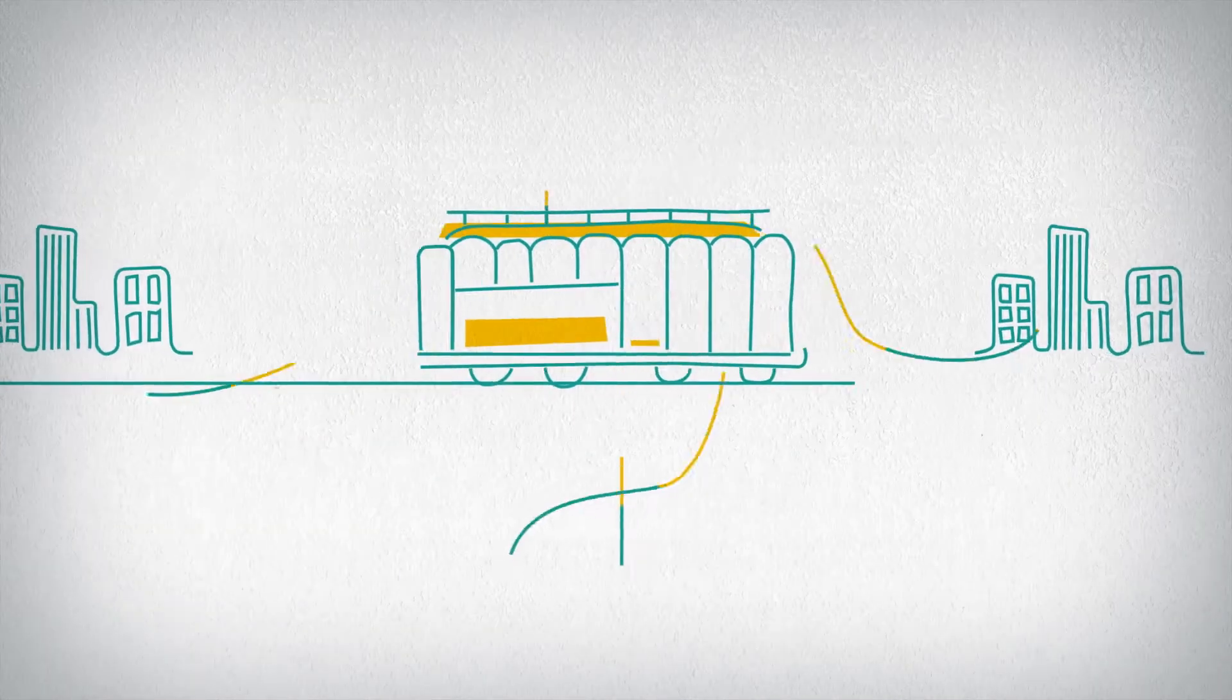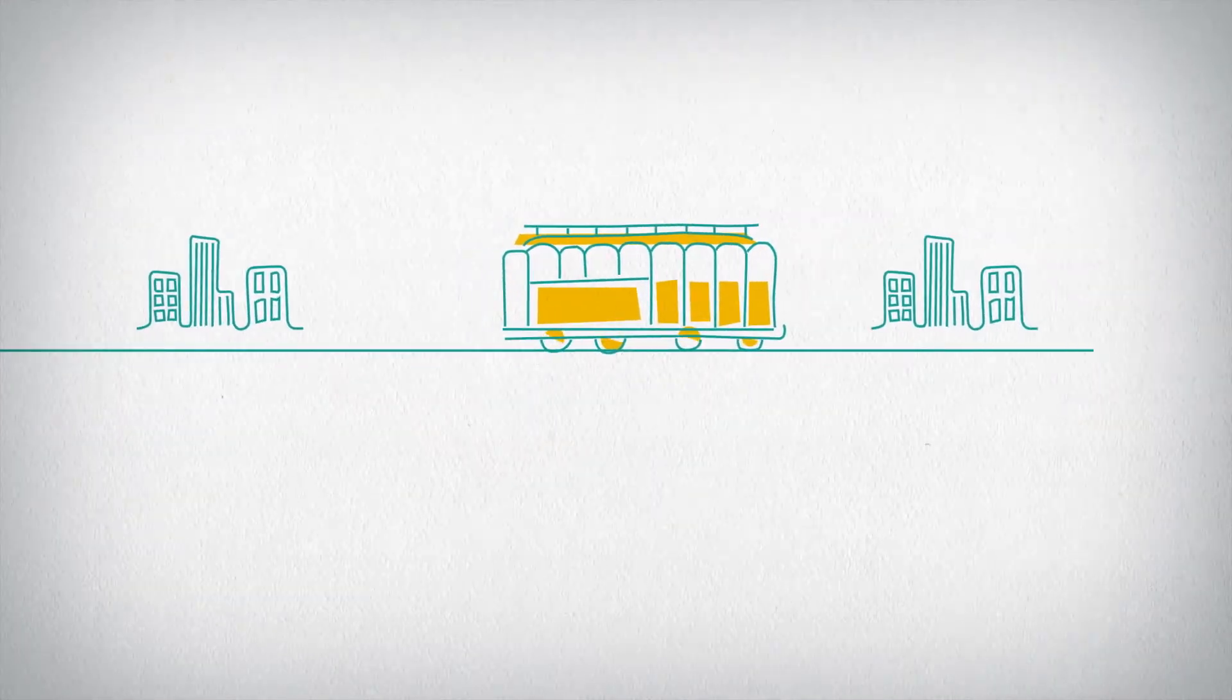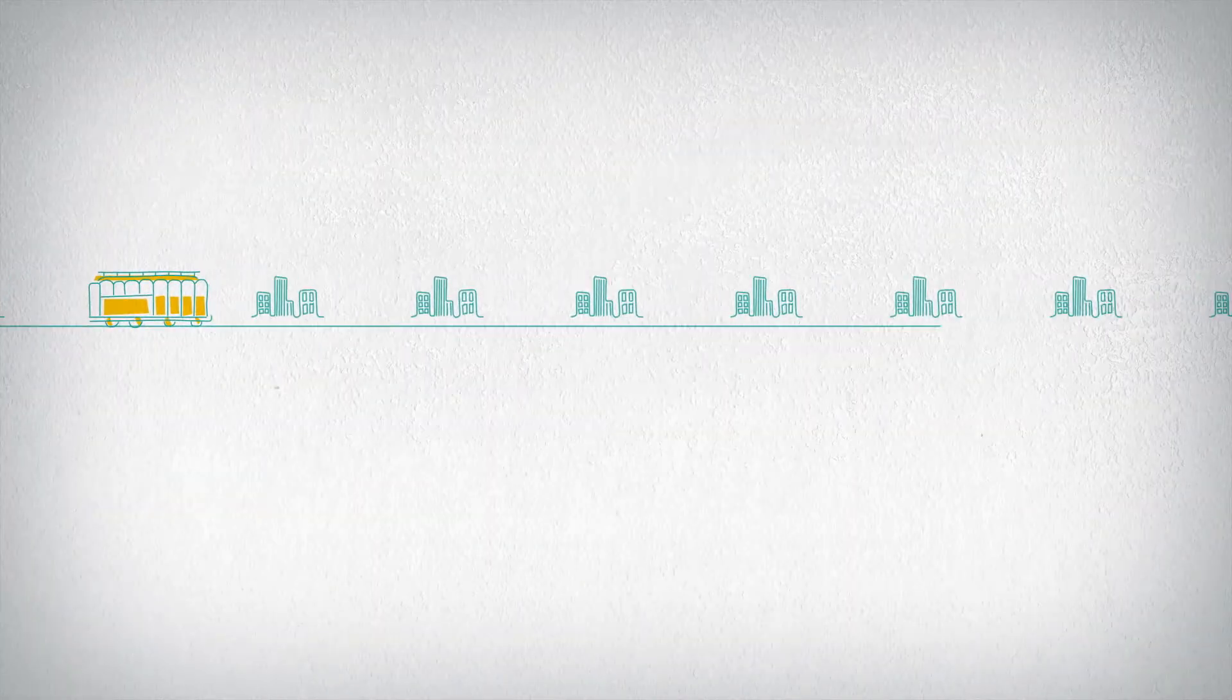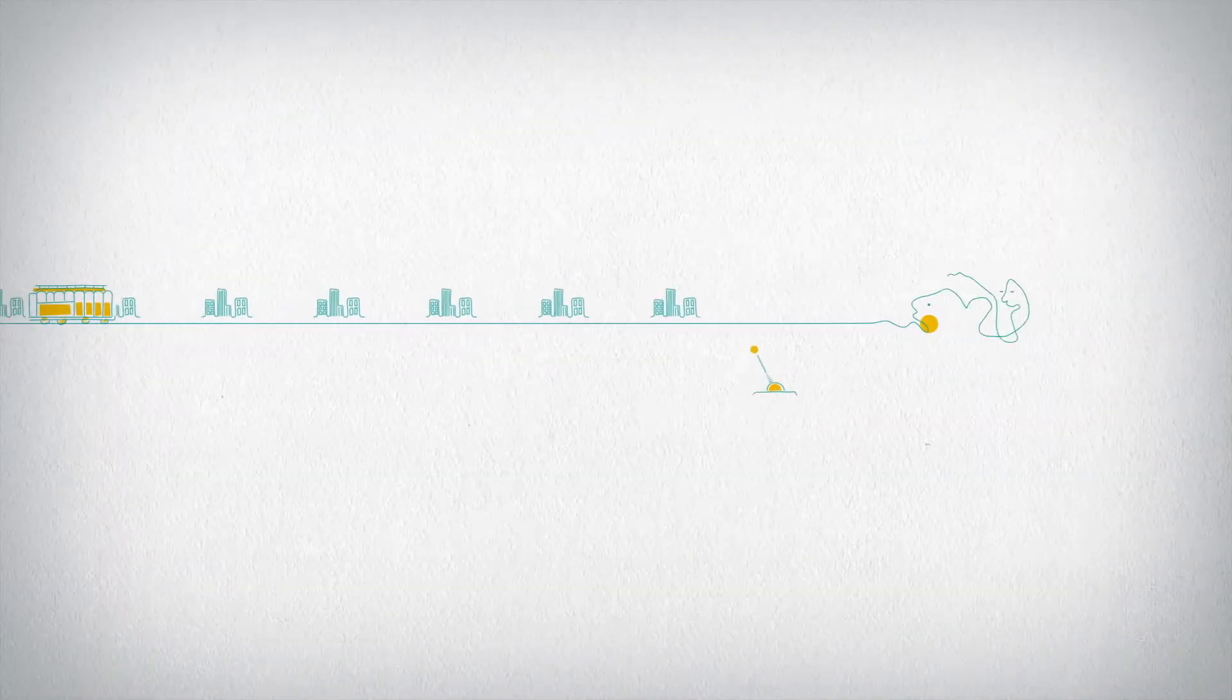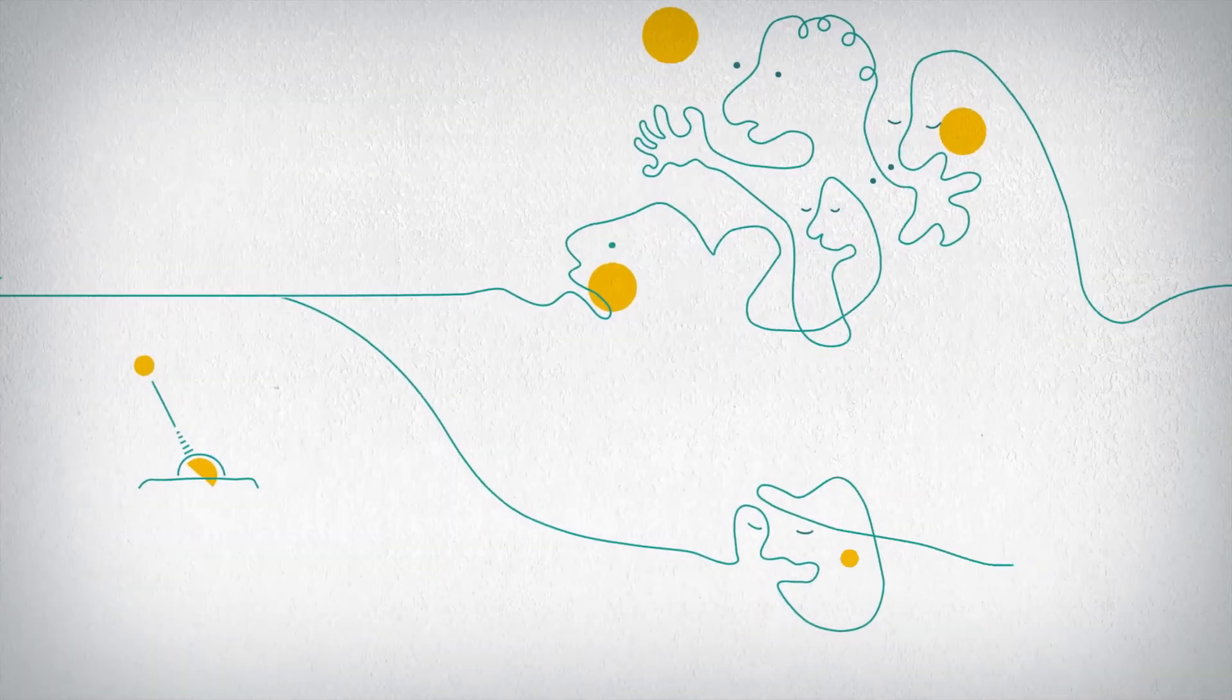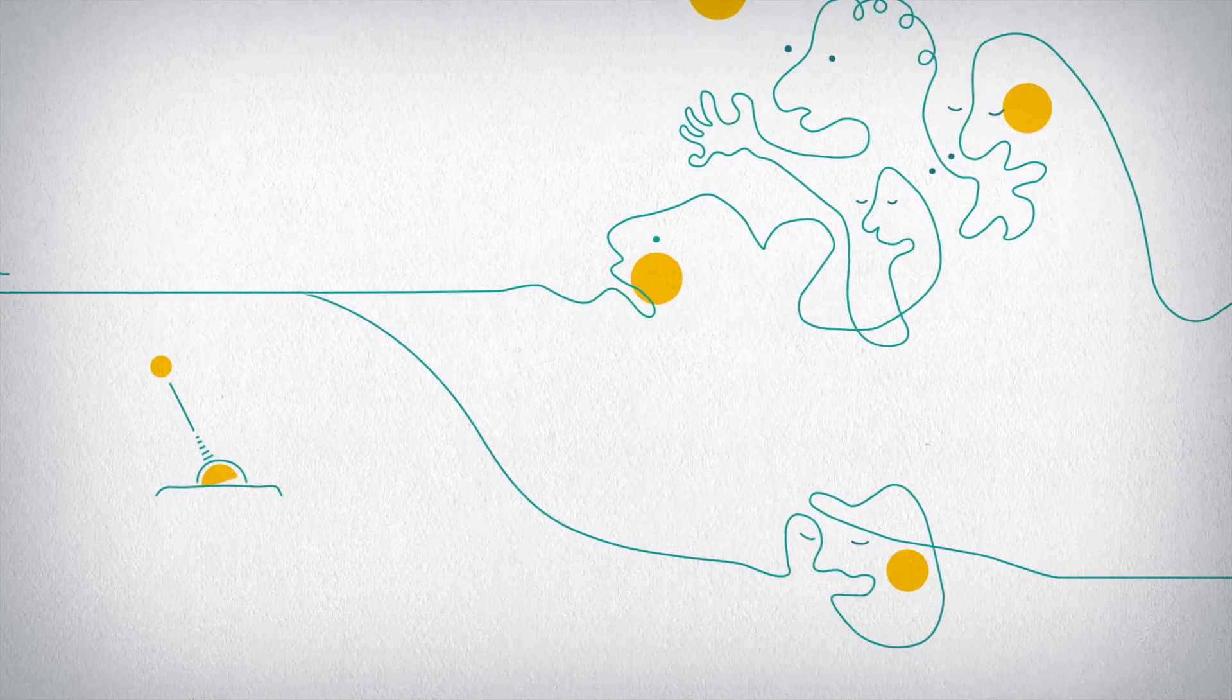The Trolley Problem is a thought experiment designed to see how we would react to different moral dilemmas. In this case, a train is racing towards five people on a track. However, you have the chance to switch to another track with only one person. Should you do it?